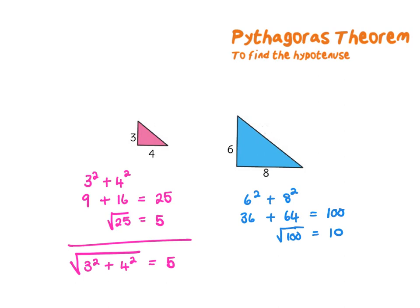Once again the short method of doing this would be to say 6 squared plus 8 squared, and everything is in the square root sign, and this will give us an answer of 10 straight away.